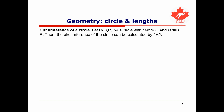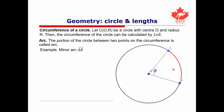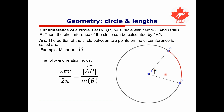The circumference of a circle is easily calculated given the radius — we multiply the radius by 2 times pi. But what if we're interested in the length of some portion of the circle? We call the portion of a circle between two points on its circumference an arc. There's a relation which gives us this length: 2πr divided by 2π equals the arc length divided by the angle AOB.